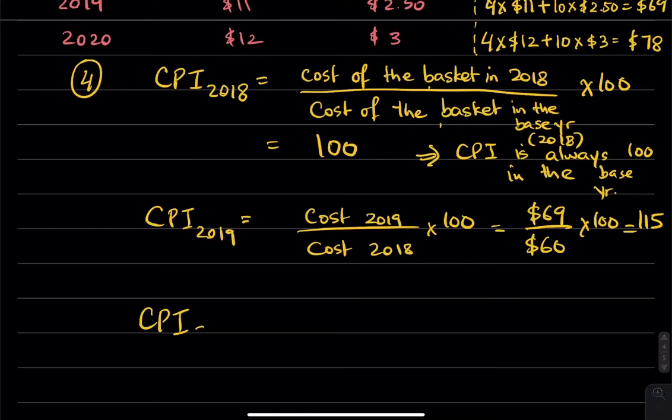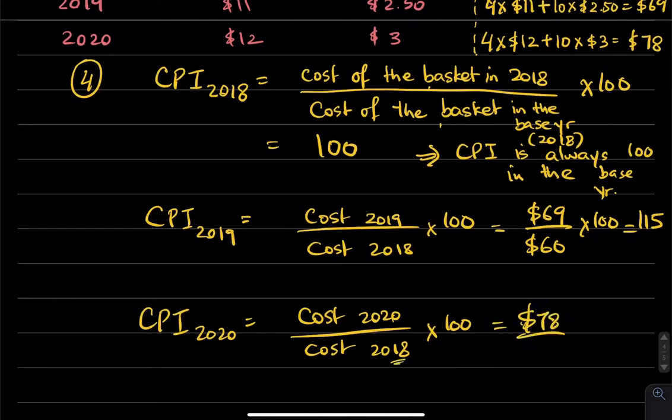Last, but not the least, we calculate CPI in 2020, which is the cost of the basket in 2020, divided by the cost of the basket in 2018, times 100. Again, 2018 is our base year. This is 78 divided by $60, times 100, which is equal to 130.